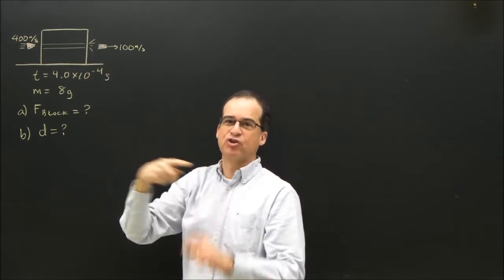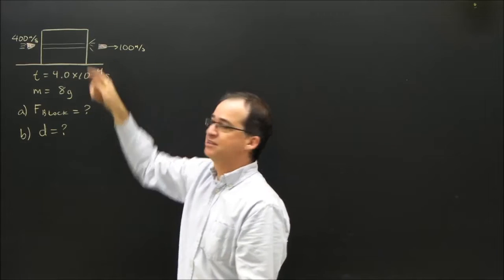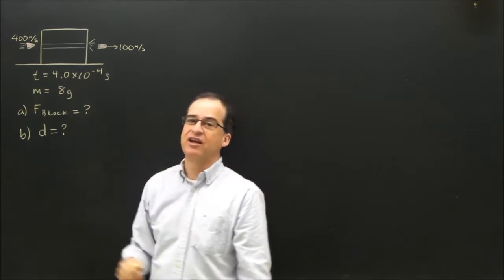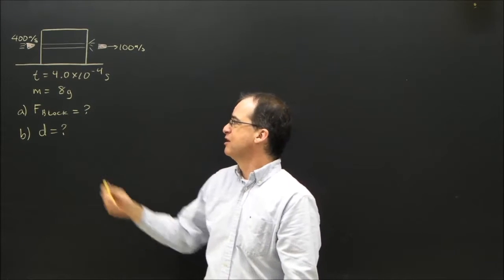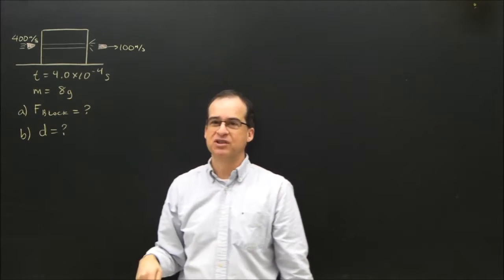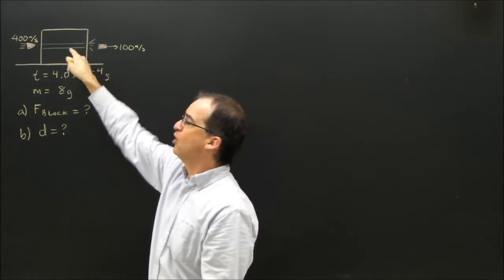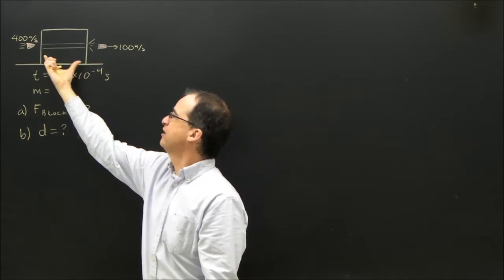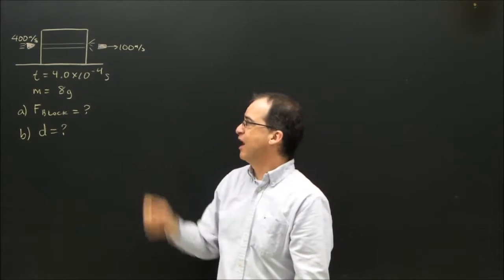pushes a hole right through the block of wood, and exits the block of wood at 100 meters per second. It takes 4 times 10 to the negative 4 seconds to do this. The bullet's mass is 8 grams. What was the force that the block exerted on the bullet to slow it down? And how thick is this piece of wood for this to happen?